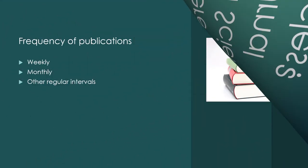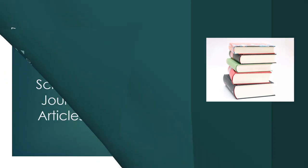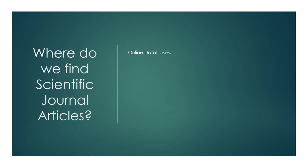Another fact we should know: some journals are published weekly, some are monthly, and some at other regular intervals. With the emergence of the internet, certain publications can easily post articles online. There are a number of websites or online databases where we can find different scientific journal articles, including PubMed, Science Direct, and High Wire Press.